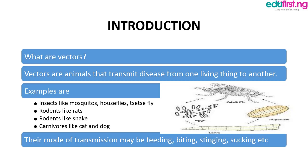Introduction — what are vectors? Vectors are animals that transmit disease from one living thing to another. Examples of these vectors include insects like mosquitoes, house flies, and fleas. We also have rodents like rats, reptiles like snakes, and carnivores like cats and dogs. The mode of transmission may be by feeding, biting, stinging, and sucking.